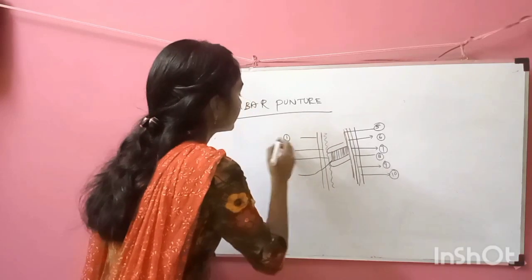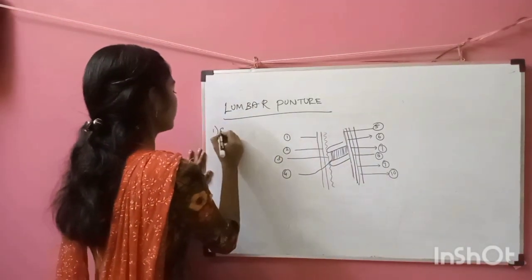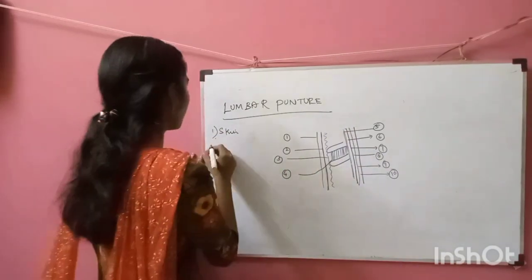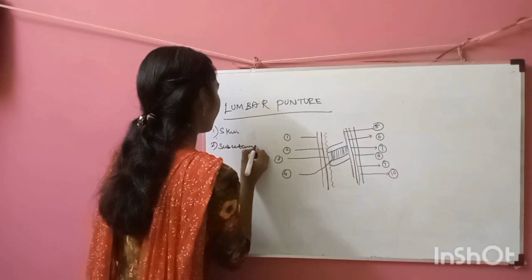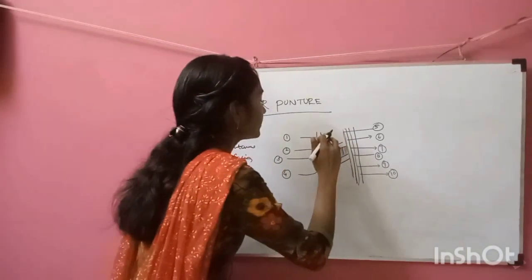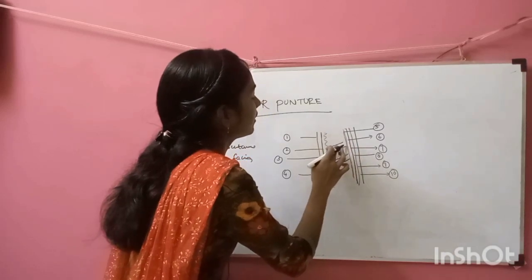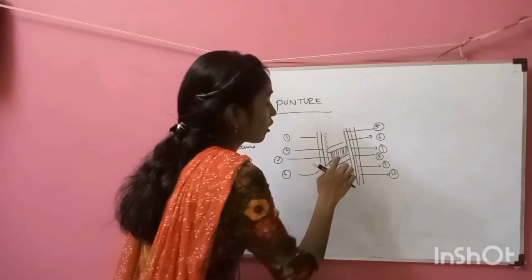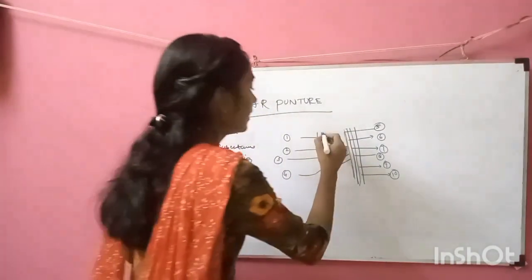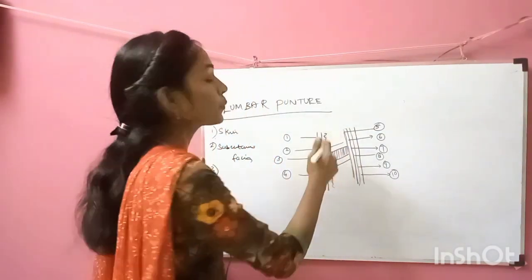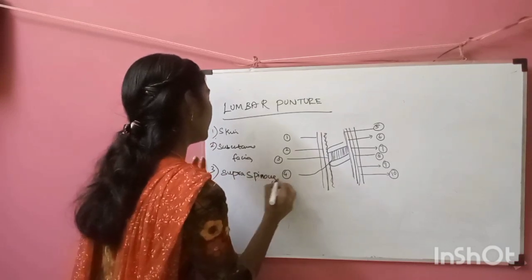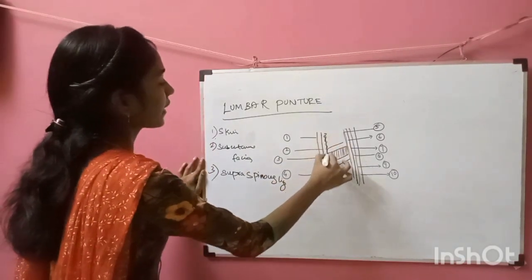The first layer is skin. The second layer is subcutaneous fascia, which lies under the skin. The third layer is the supraspinous ligament — this is the ligament that runs above the spinous processes. For example, above the spinous processes of L4 and L5 is the supraspinous ligament.